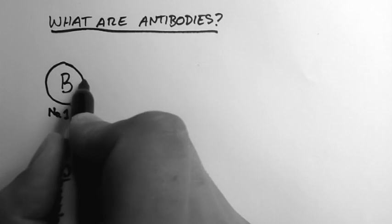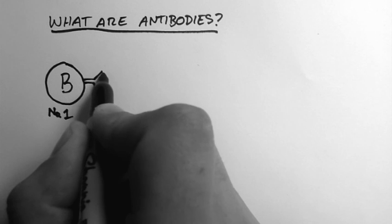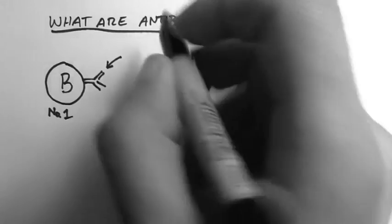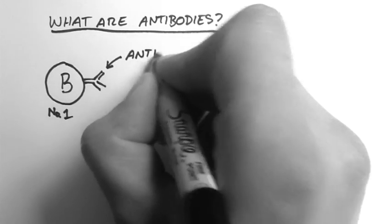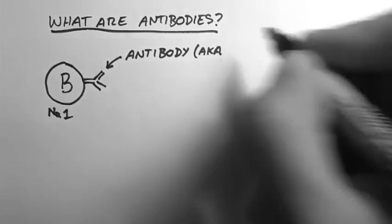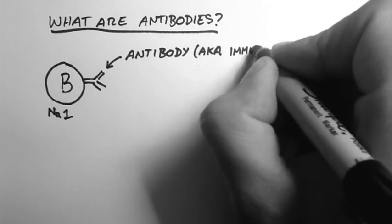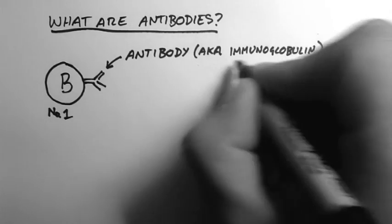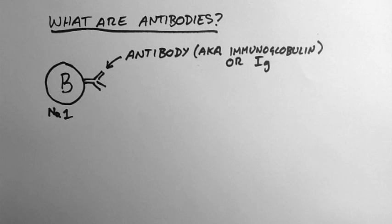And the antibody is a Y-shaped molecule or protein which sits on the surface of the B-cell. They are also known as immunoglobulins or Ig for short.